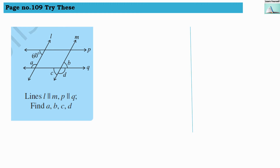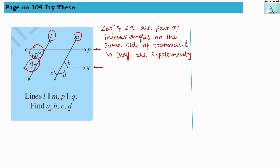Line L is parallel to line M, and line P is parallel to line Q. With these four lines, we have to find the measure of angles A, B, C, and D. Let us start: the angle whose measure is 60 degrees and angle A are a pair of interior angles on the same side of the transversal, so they are supplementary. Adding 60 degrees and angle A should give us 180 degrees, so angle A equals 180 minus 60 degrees, which gives us 120 degrees.